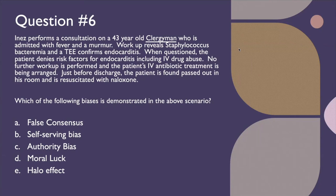Question number six: Inez performs a consultation on a 43-year-old clergyman admitted with fever and a murmur. The workup reveals staphylococcus bacteremia and a TEE confirms endocarditis. When questioned, the patient denies risk factors for endocarditis including IV drug abuse — he's somewhat indignant about the allegation. No further workup is performed and IV antibiotic treatment is being arranged. Just before discharge, the patient is found passed out in his room and is resuscitated with naloxone. Which bias is demonstrated — false consensus, self-serving bias, authority bias, moral luck, or halo effect?